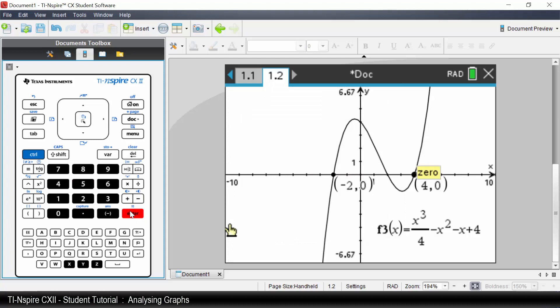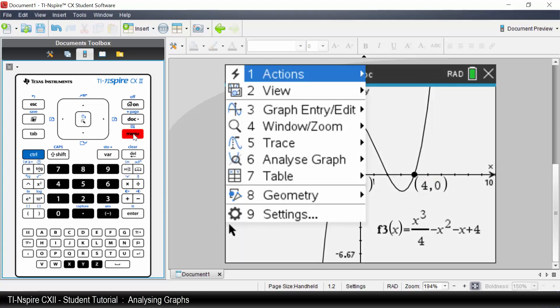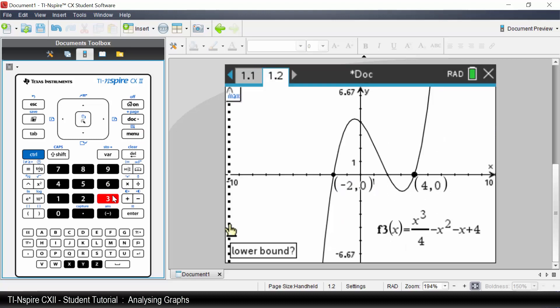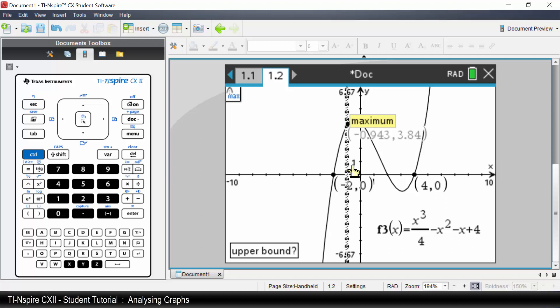Let's determine a local maximum. Press Menu. Select Analyze Graph. Select Maximum. You have decimals with your values. You may wish to change the settings.